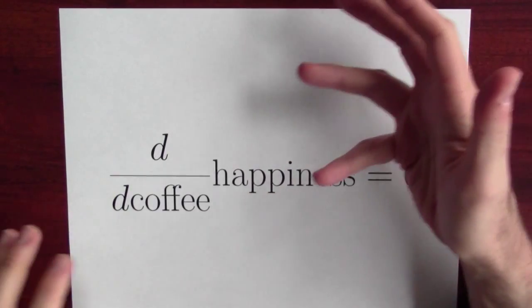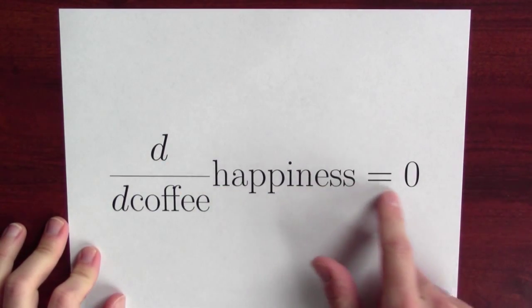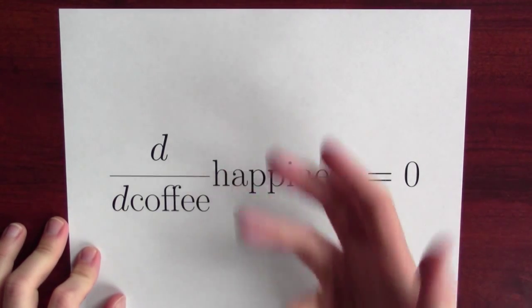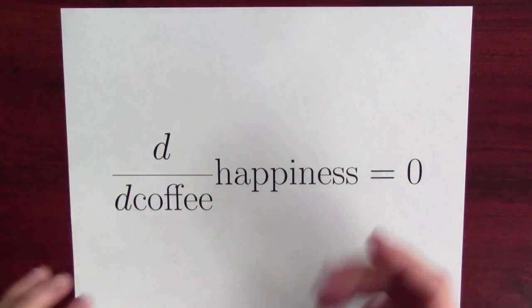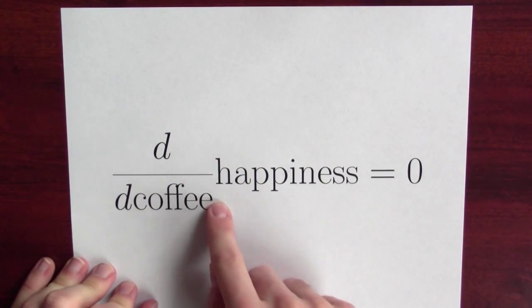After you've had a whole bunch of coffee, you might find that the derivative of your happiness with respect to coffee is zero. You should stop drinking coffee. Now, this makes sense because the derivative depends upon x, right? It depends upon how much coffee you've had.